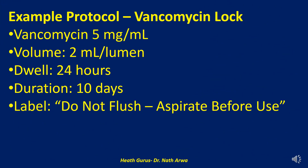We will now look at an example antibiotic lock protocol for vancomycin. 1. Antibiotic name: vancomycin. 2. Concentration: 5 mg/mL. 3. Volume: 2 mL per lumen. 4. Dwell: 24 hours. 5. Duration: 10 days. 6. Preparation: vancomycin 500 mg in 100 mL of normal saline — use 2 mL per lumen. 7. The label should read: vancomycin lock 5 mg/mL — do not flush; aspirate before use.